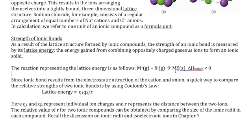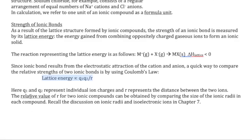One way we can quantify this is by comparing the types of ions involved and the distance that separates them. The basis of lattice energy is electrostatic interaction, so we can estimate it using Coulomb's law. Lattice energy is proportional to Q1 times Q2 over R, where Q1 and Q2 represent the charges of the cation and anion, and R represents the distance between the two ions. The larger those charges are, the stronger the attraction; and the larger R is, the weaker the interaction.